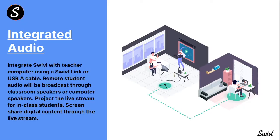With integrated audio, you integrate Swivel with the teacher computer using the Swivel Link for wireless or a USB-A cable. Remote student audio is broadcast through classroom speakers or computer speakers. You project the live stream for in-class students and screen share digital content through the live stream, because that is the primary way remote students receive instruction — whether sharing a web page, presentation, or whiteboard. Always remember to share that screen through Google Meet so remote students can see it properly.